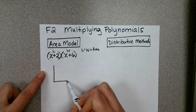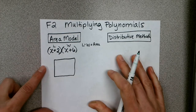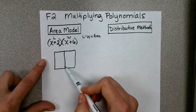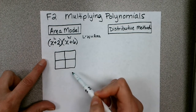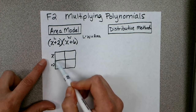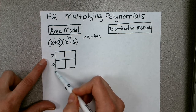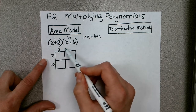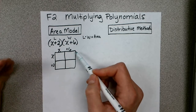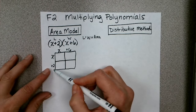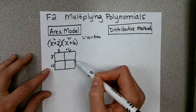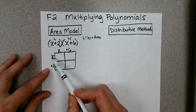To set up an area model, we draw a rectangle. Because our length and width each have two parts, we divide those dimensions into two sections. I'll put x plus 2 as the length and x plus 6 as the width. The product of multiplying these two binomials is really the area of all the individual squares inside the rectangle.